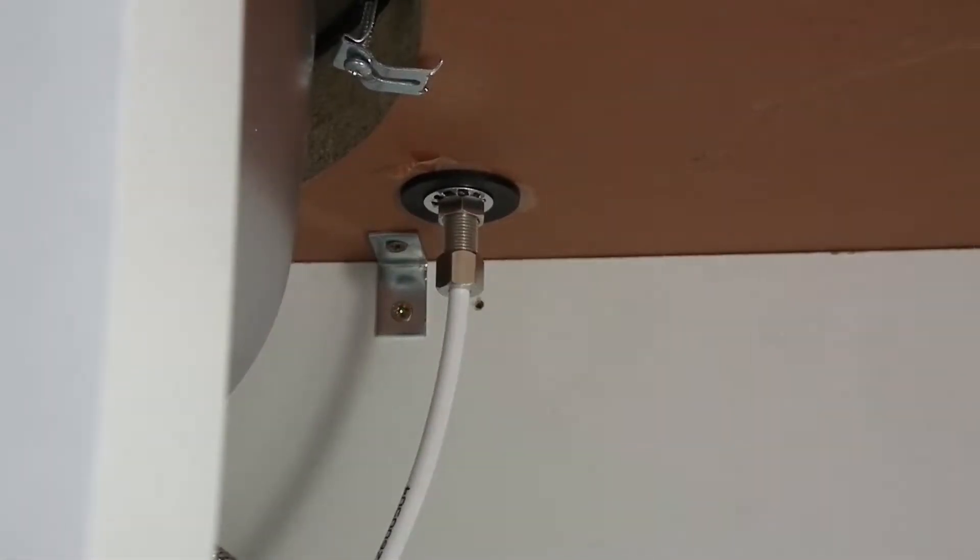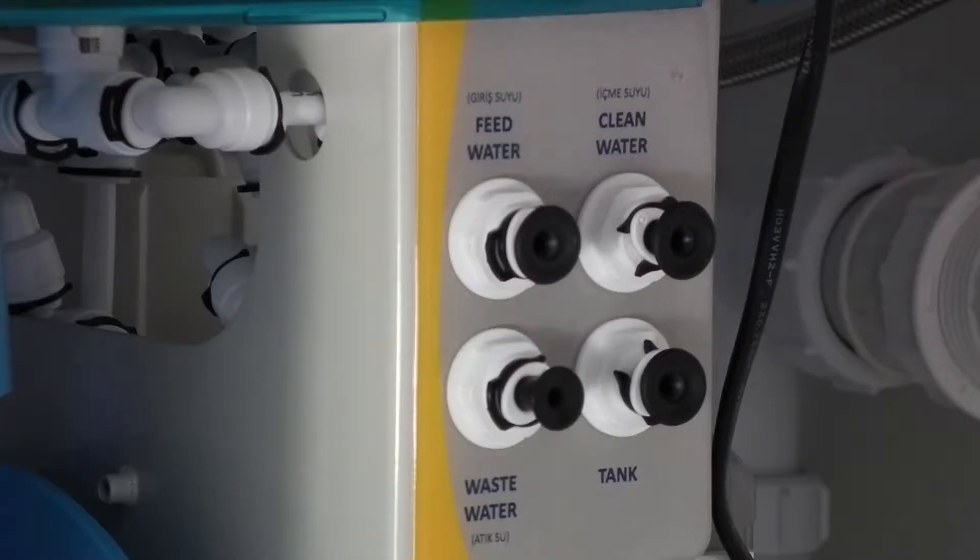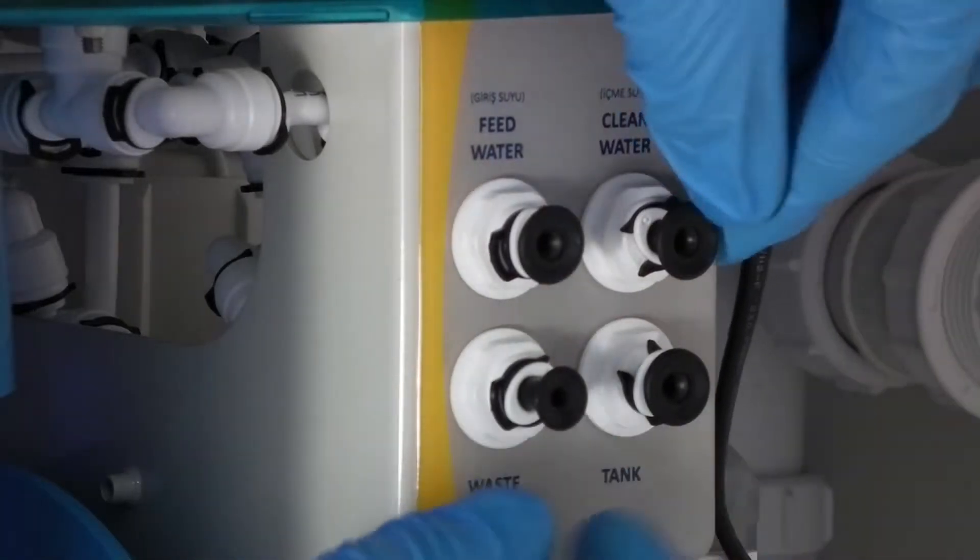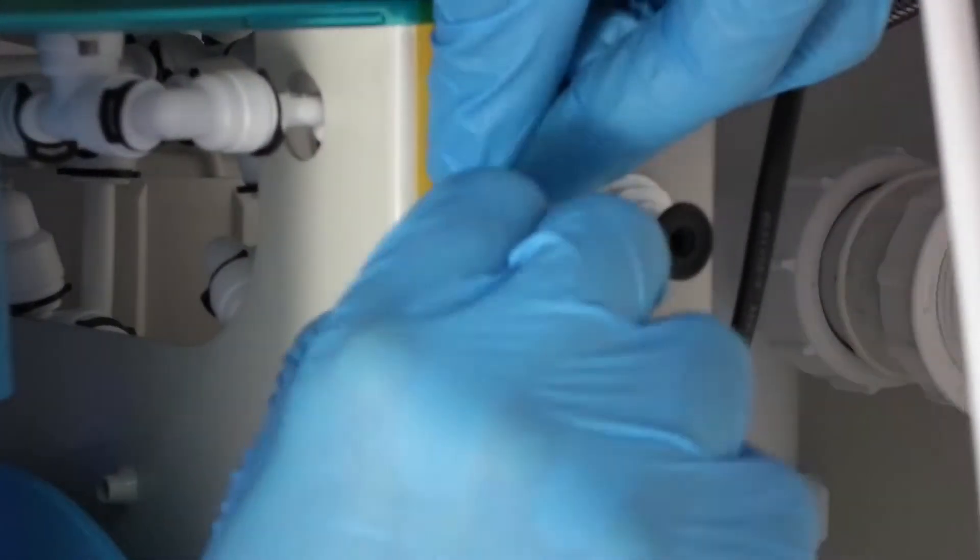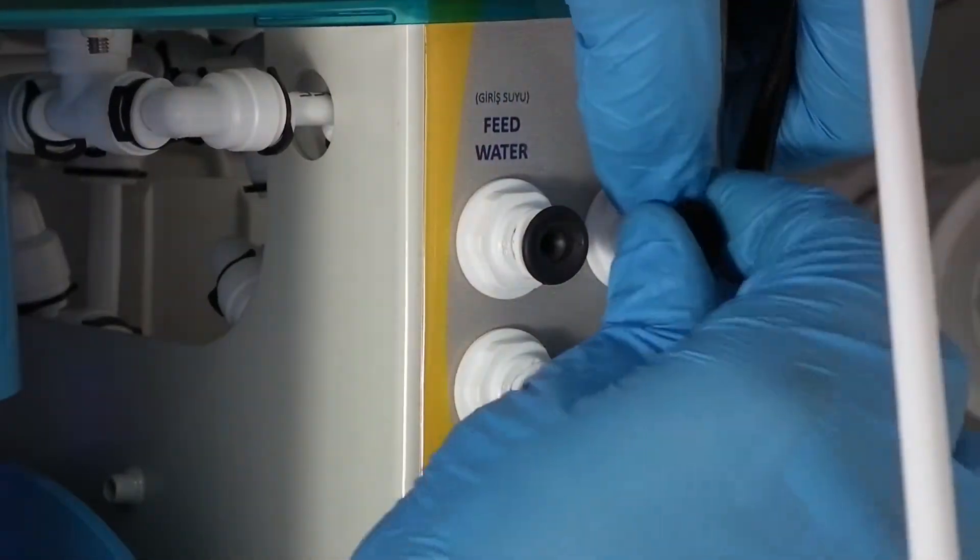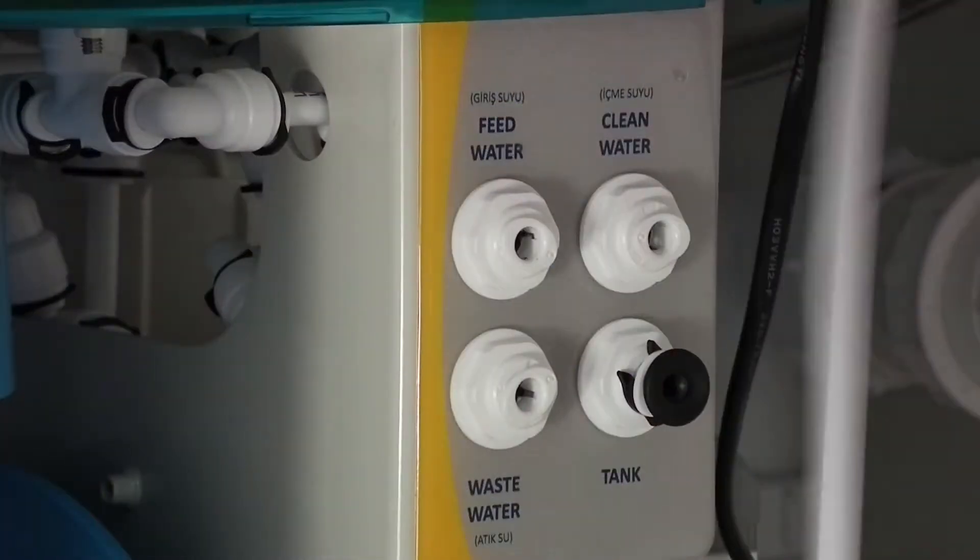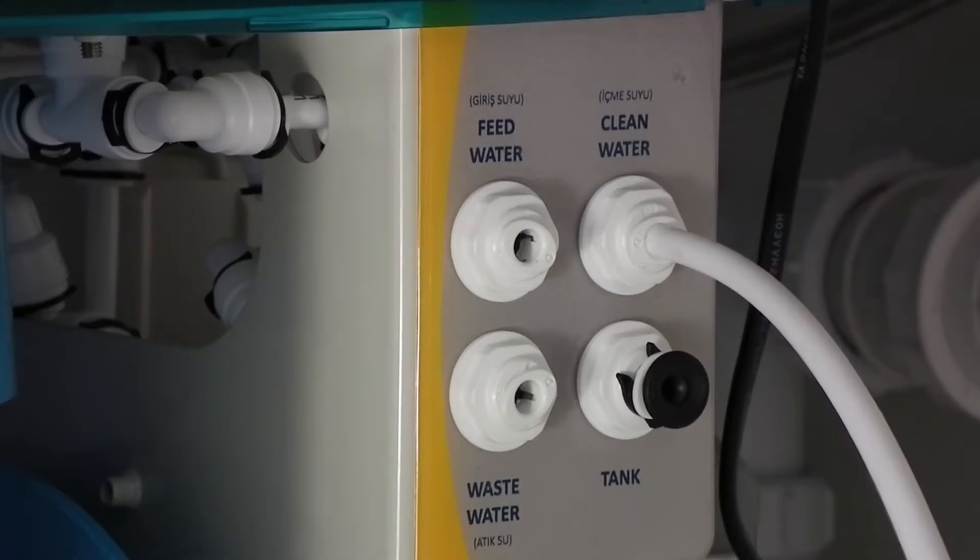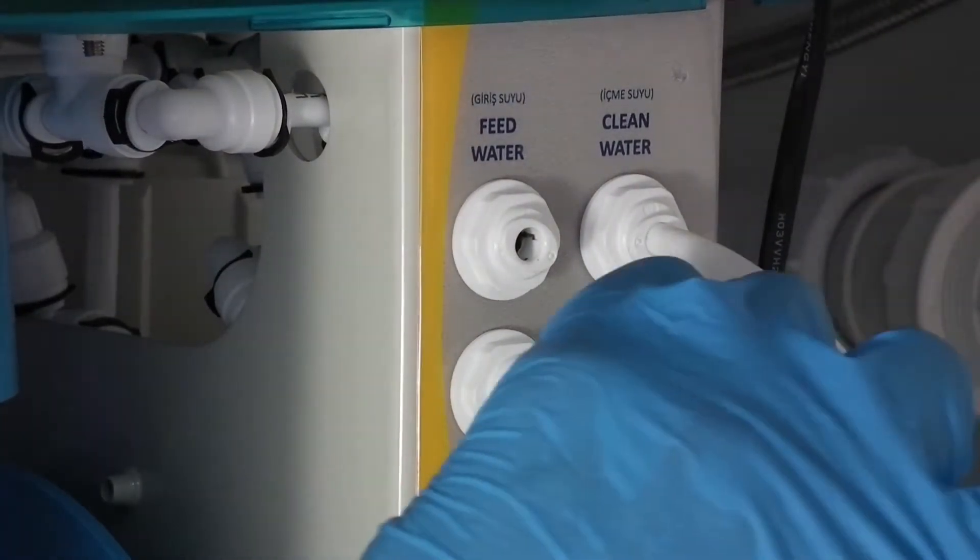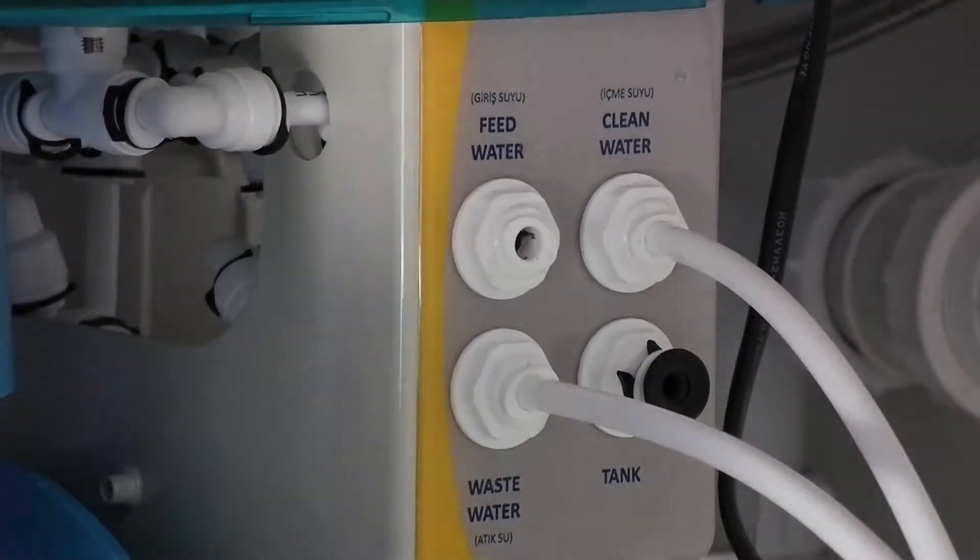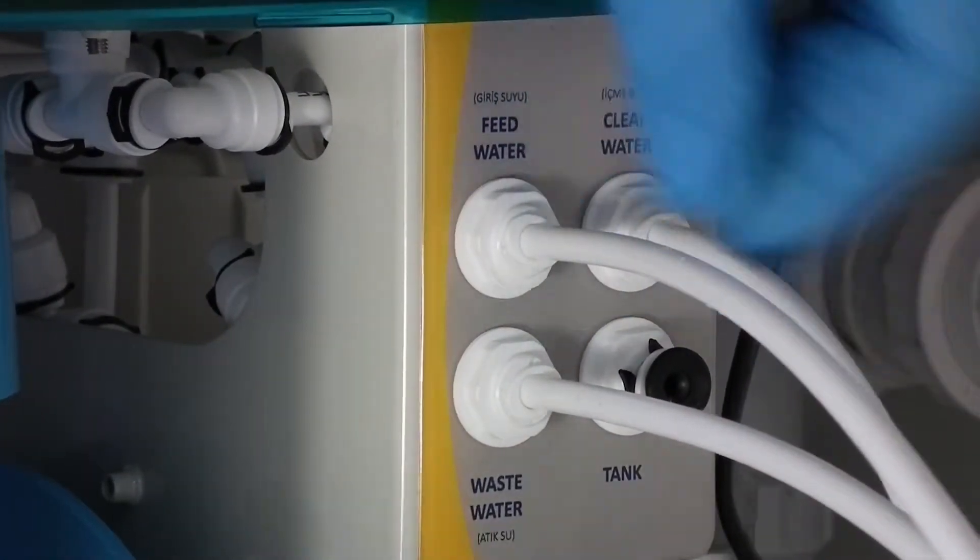Once all three pieces of white tubing are connected, we can now connect up the filter system. First remove the three blanking plugs which cover the connections. Connect the tap to the clean water outlet, the waste tubing to the waste water, and the main water feed to the feed water. Secure the connections by placing back the black clips.